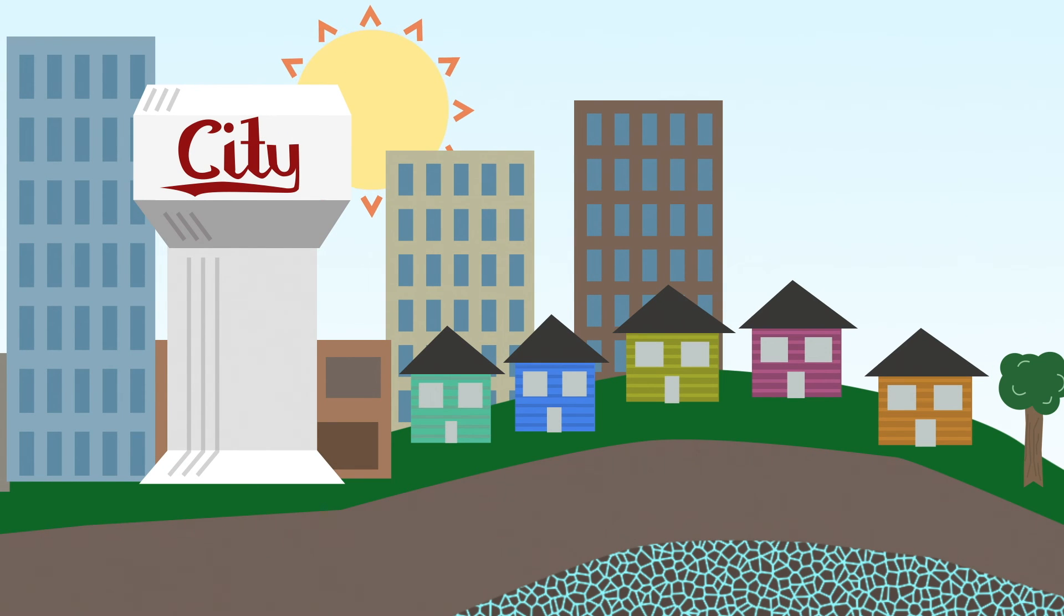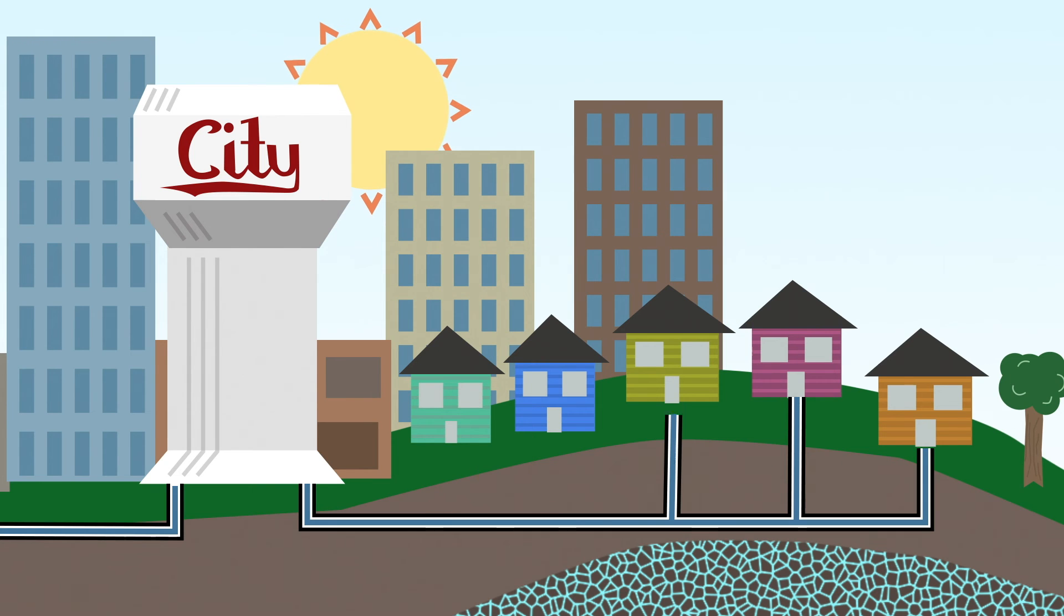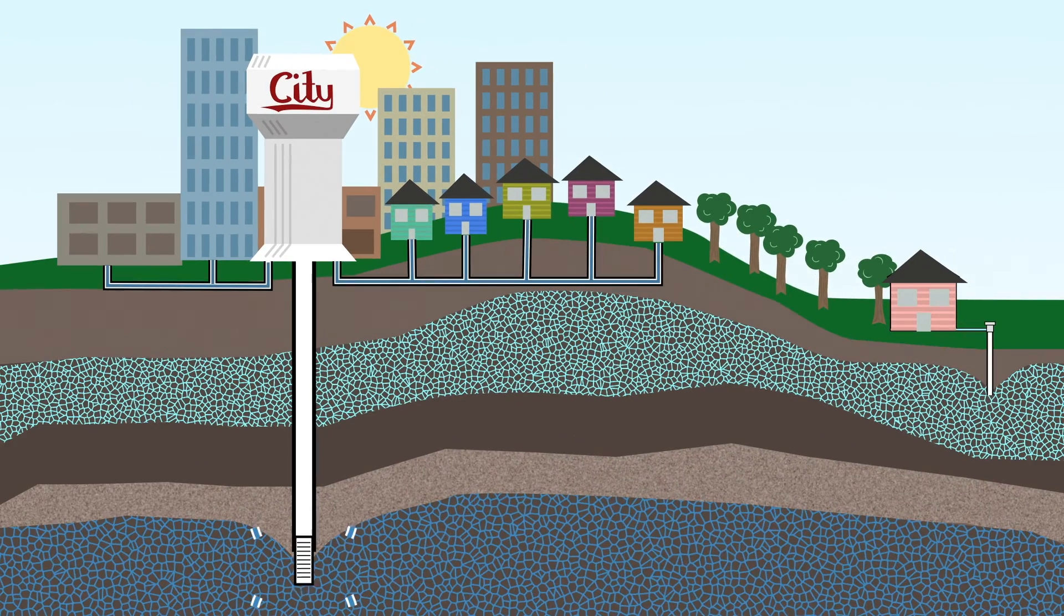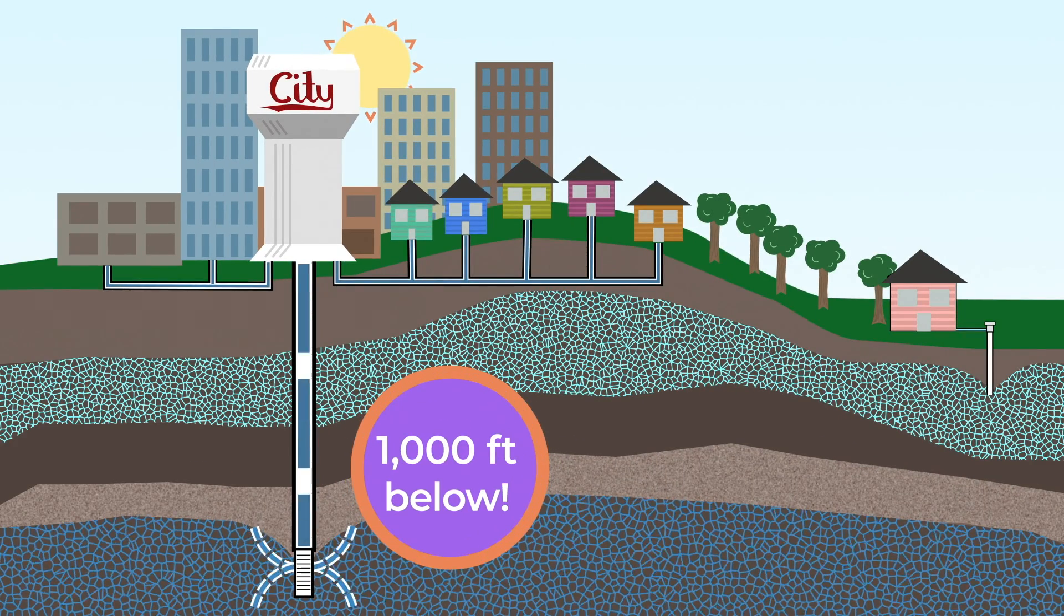Private well owners aren't the only ones who depend on groundwater. Many cities distribute water to their residents from deep city wells that suck water from around 1,000 feet below ground.